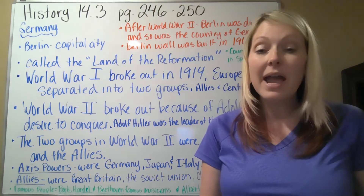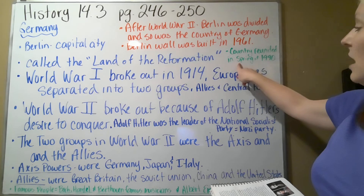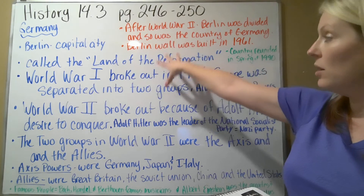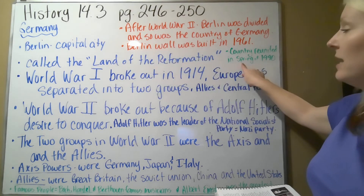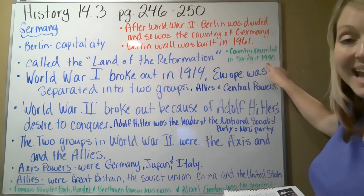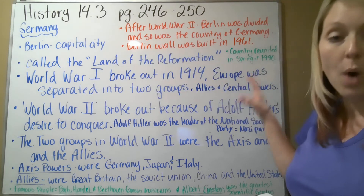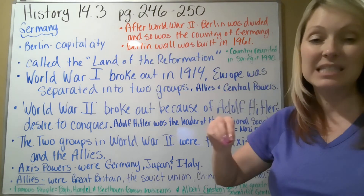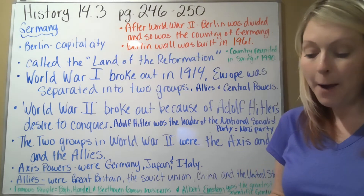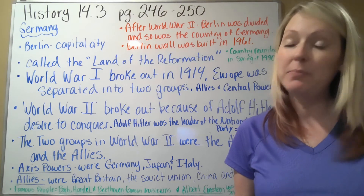Just to clarify: when the Berlin Wall started coming down, the country reunited in the spring of 1990, when Germany became one nation — no longer split between West and East Germany.